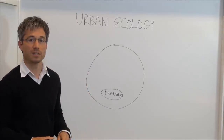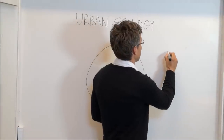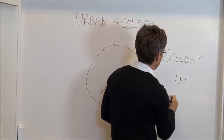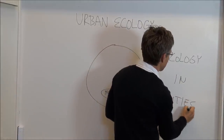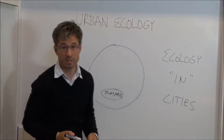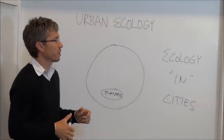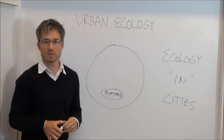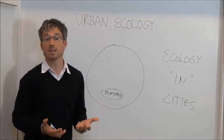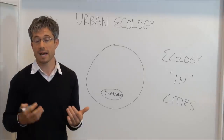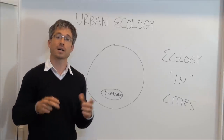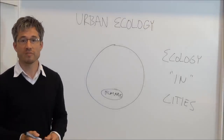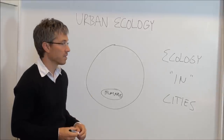Now, we have two principal approaches in urban ecology. The first we can call ecology in cities — and by cities, we also mean urban regions and urban complexes. This initial approach is one where we apply traditional ecology methods to urban systems. For example, we may study the interactions between urban soils and how they affect plant community structure and function, but in the context of a city.